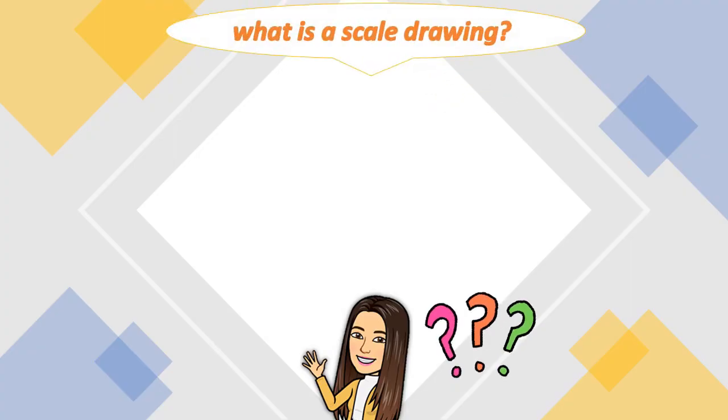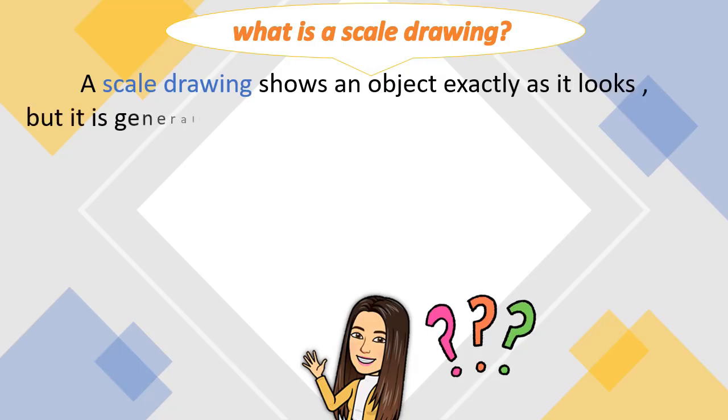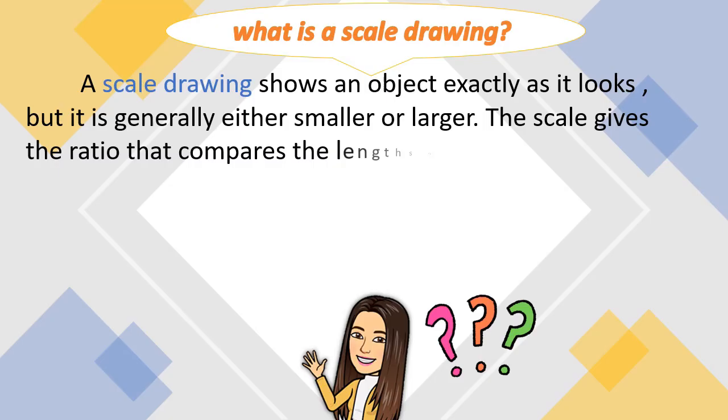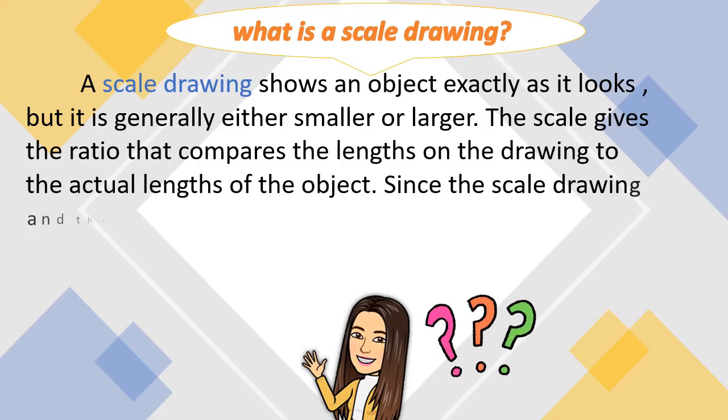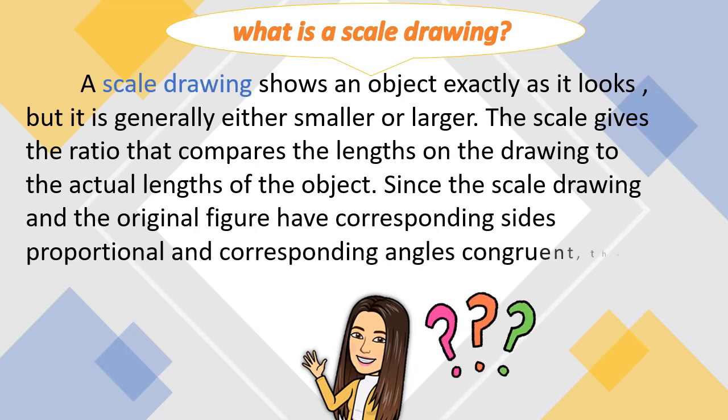A scale drawing shows an object exactly as it looks, but it is generally either smaller or larger. The scale gives the ratio that compares the lengths on the drawing to the actual lengths of the object. Since the scale drawing and the original figure have corresponding sides proportional and corresponding angles congruent, they are similar figures.